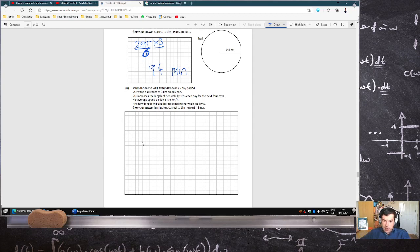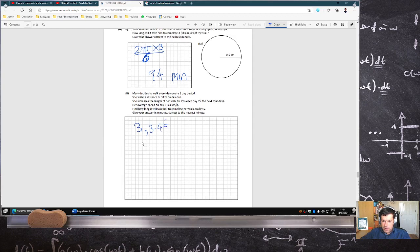So, she walks 3, and then she increases by 15%, so then it's 3.45, 3.9675 on day 3, day 4, et cetera. It's really day 5 that I care about, so the distance will be 5.247 kilometers on day 5.